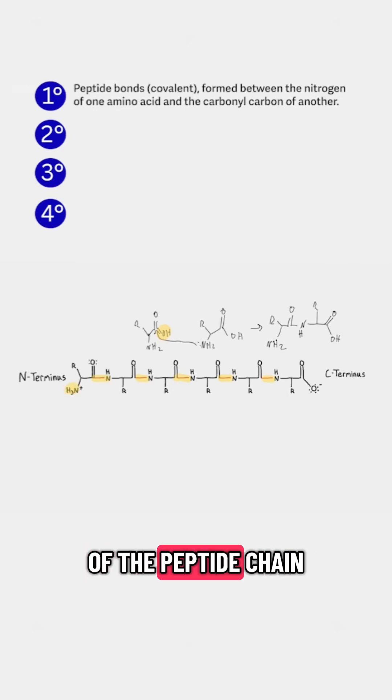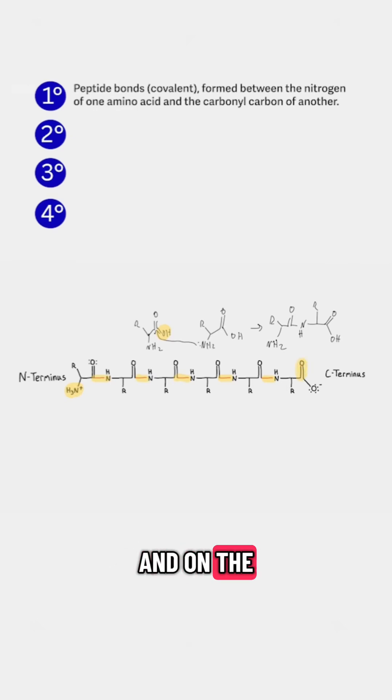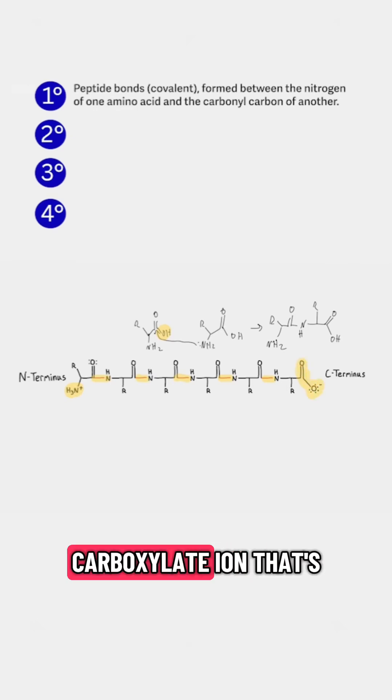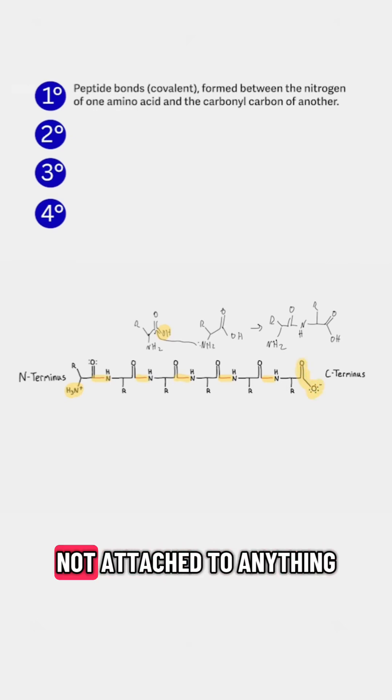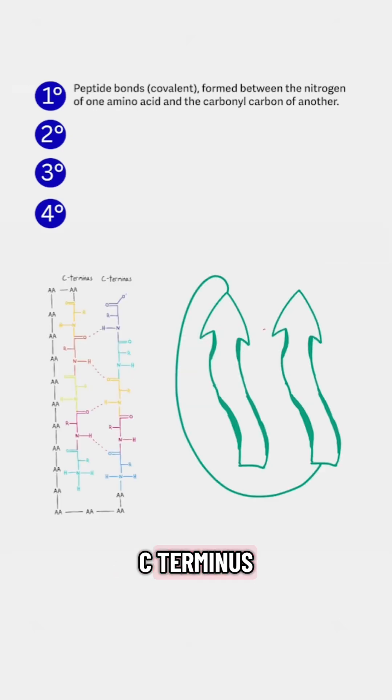On one end of the peptide chain, you have an amino group that's not attached to anything, and that's the N-terminus. On the other end, you have the carboxylate ion that's not attached to anything, and that's the C-terminus.